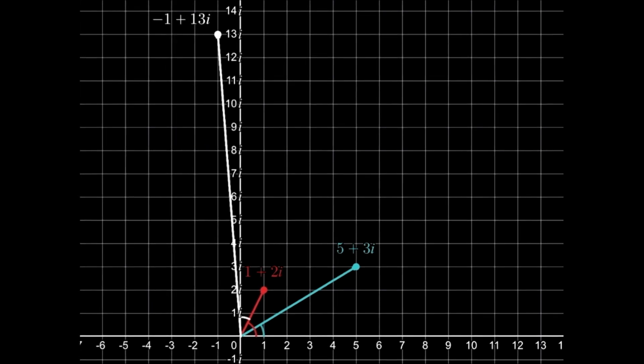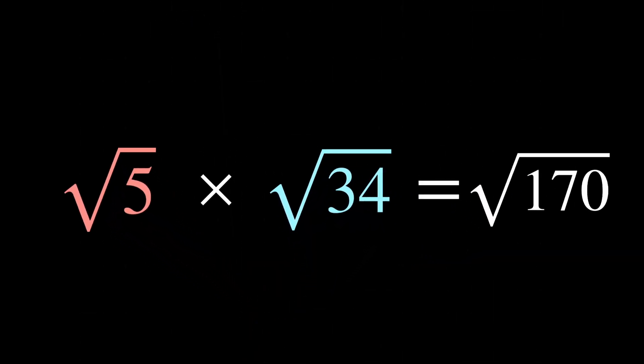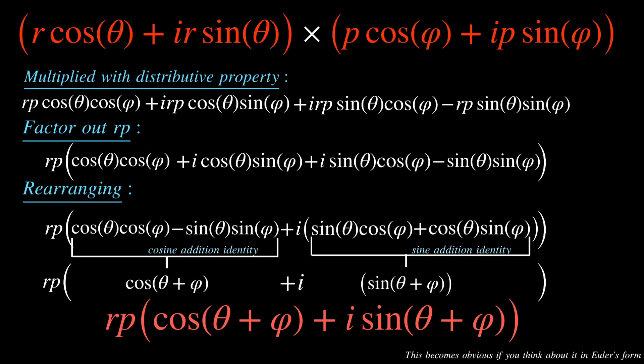What about the absolute values? 1 plus 2i has an absolute value of square root of 5. 5 plus 3i has an absolute value of square root of 34, and the absolute value of their product is square root of 170. The absolute value of the product is the product of the absolute values. It turns out this is true for all complex numbers. Here's an explanation for why this might work for those of you who want to pause and read.